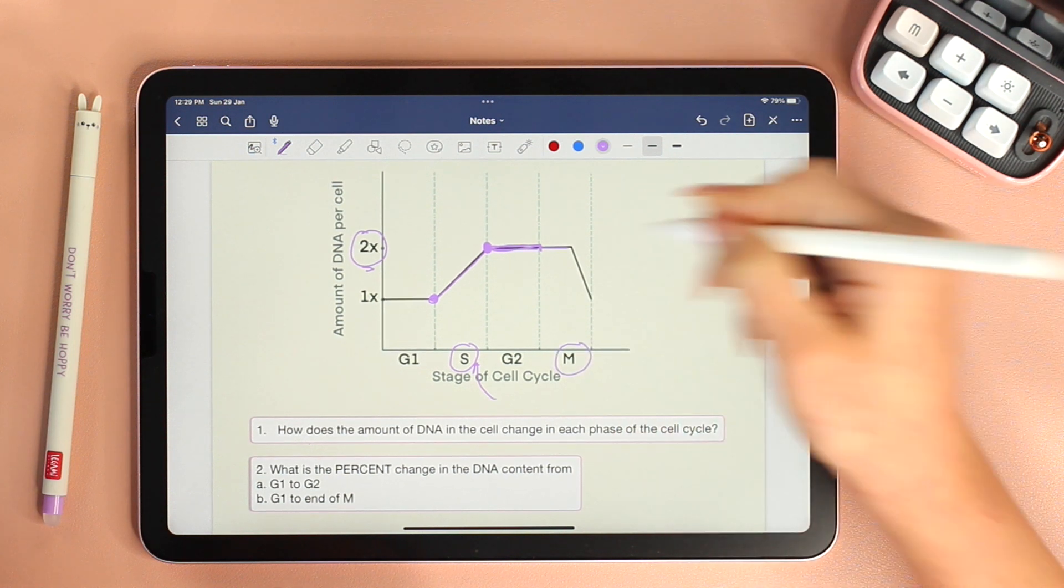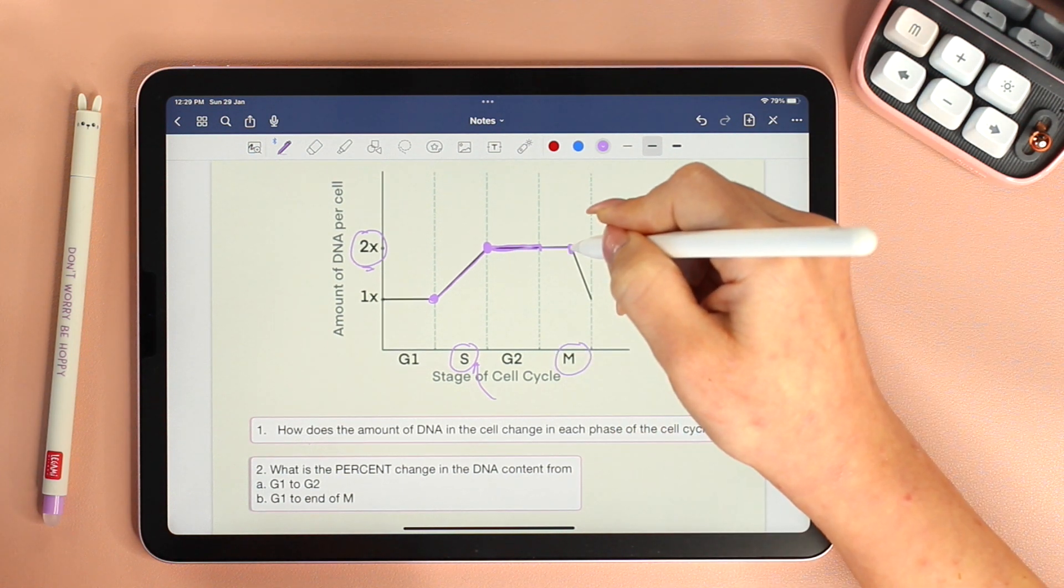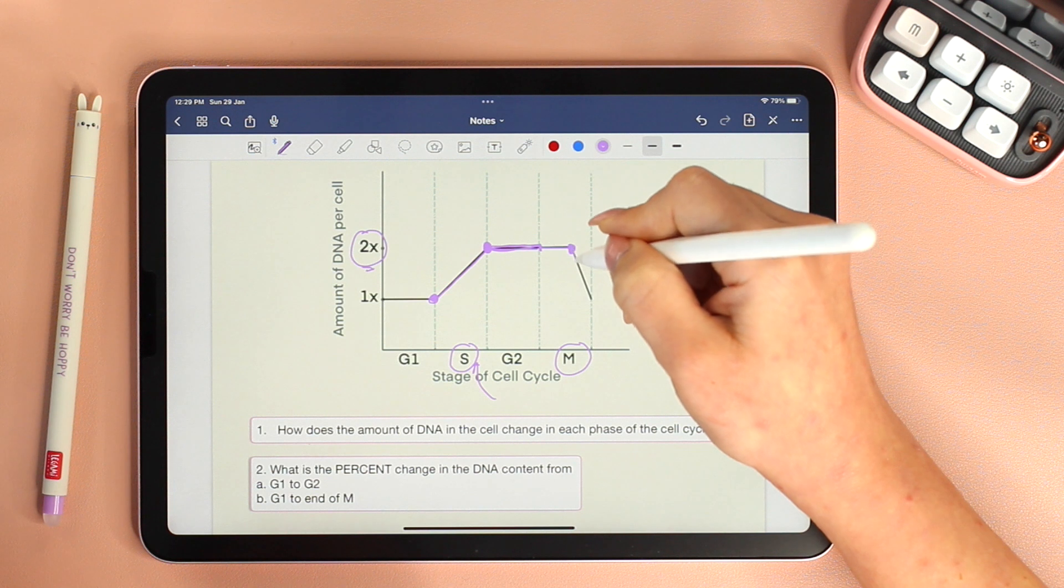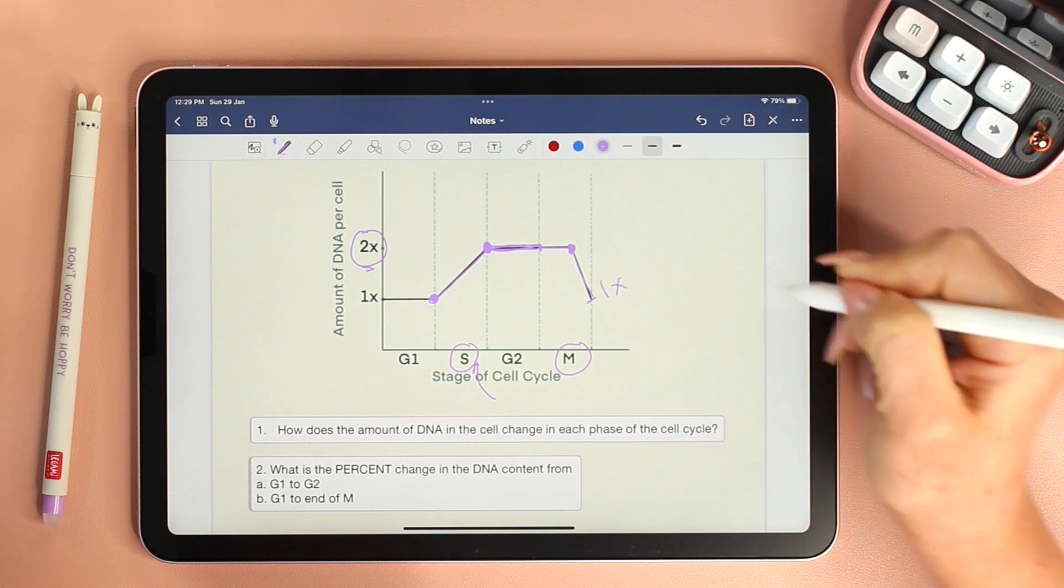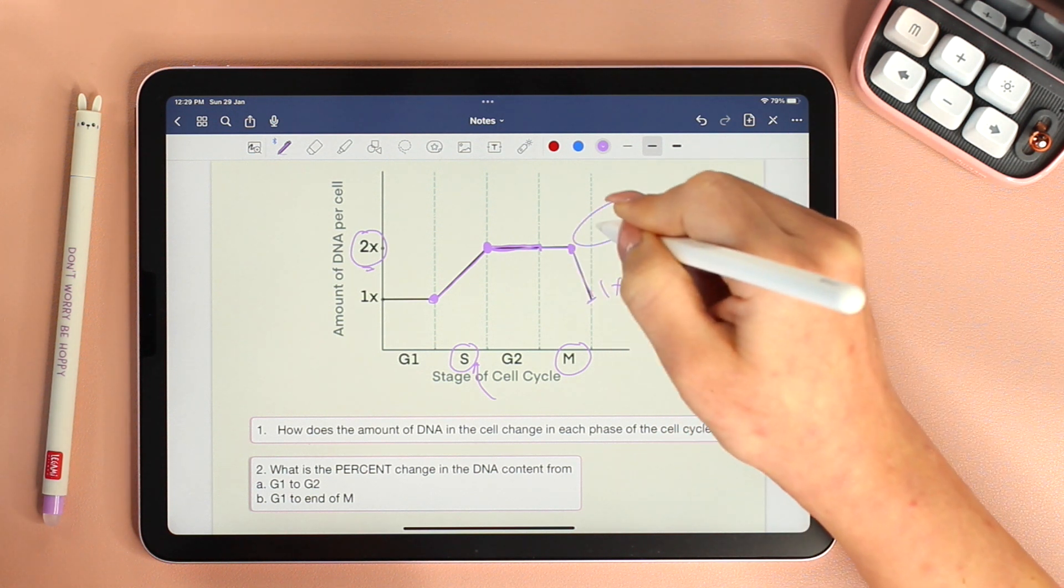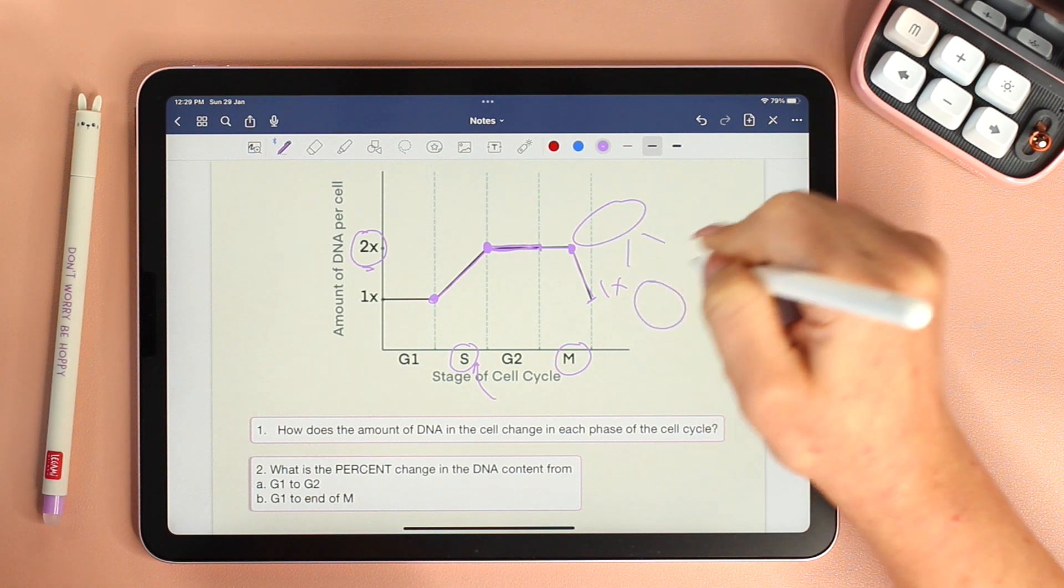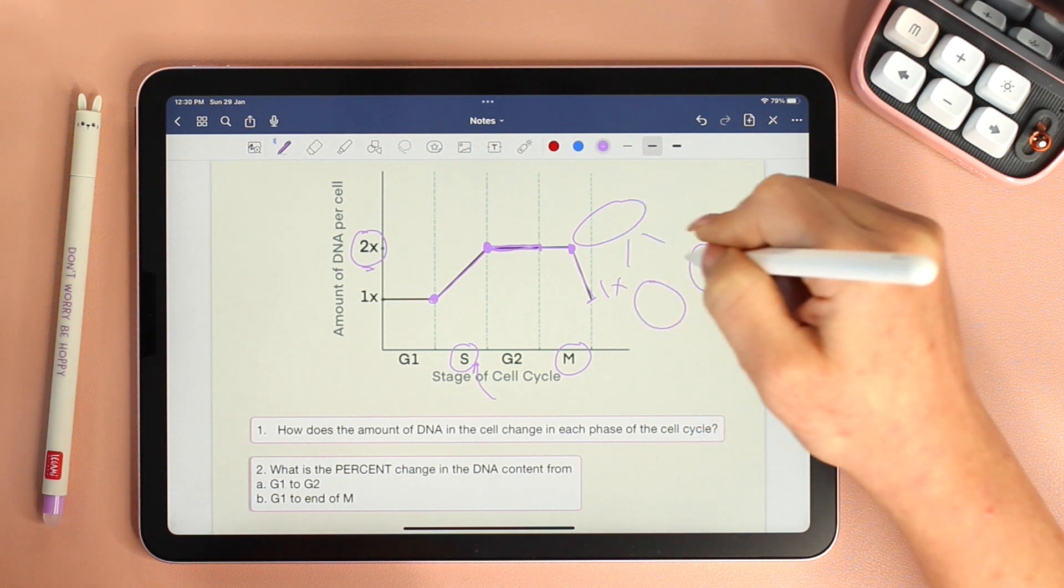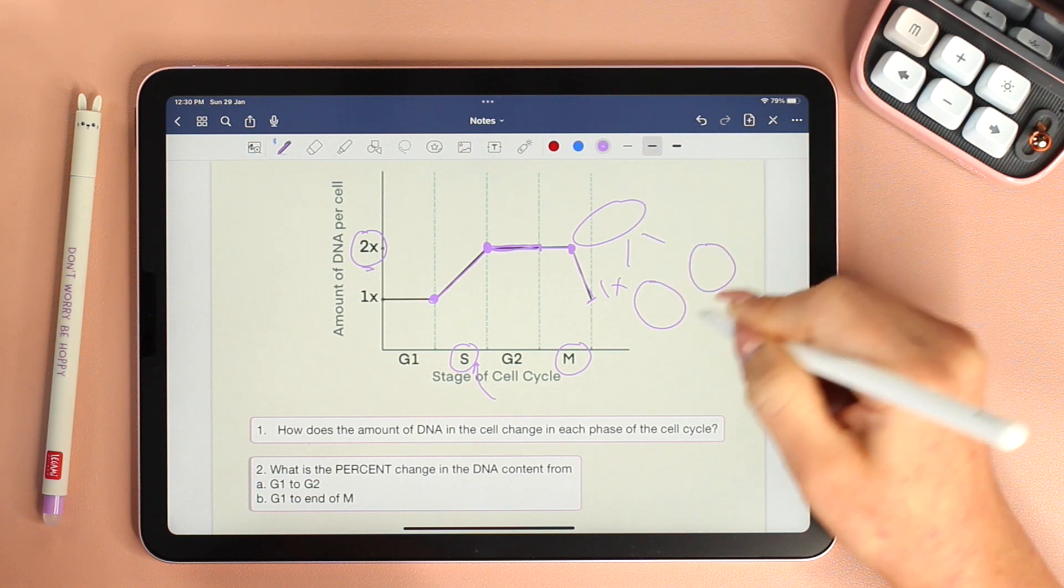So as we reach the mitotic phase, we can see that the amount of DNA goes back from 2x to 1x. Why? Because the cell at this point has divided into two cells, splitting the DNA content into two.